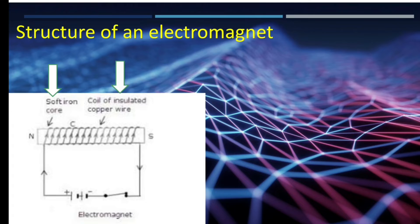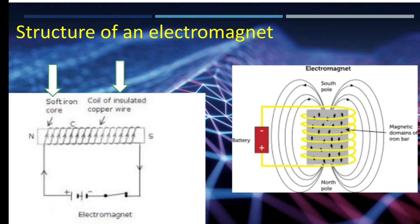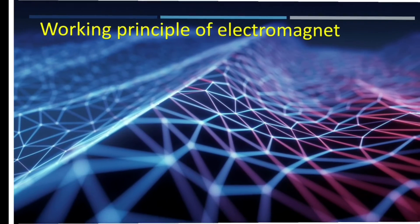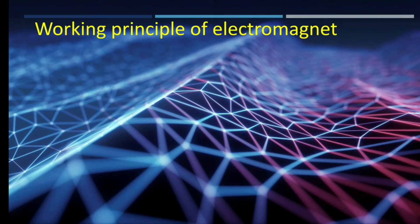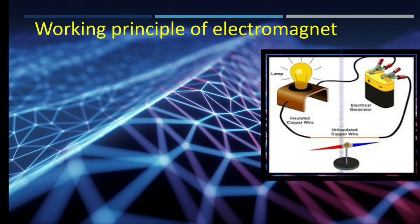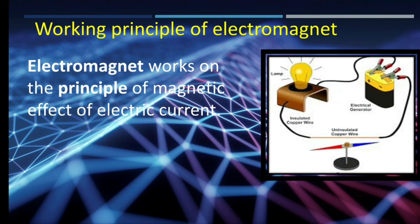When we connect the core and coil from a DC or AC supply, it starts behaving like a permanent magnet — it develops a north pole and a south pole, and also develops a magnetic field around it. An electromagnet works on the principle of the magnetic effect of electric current.